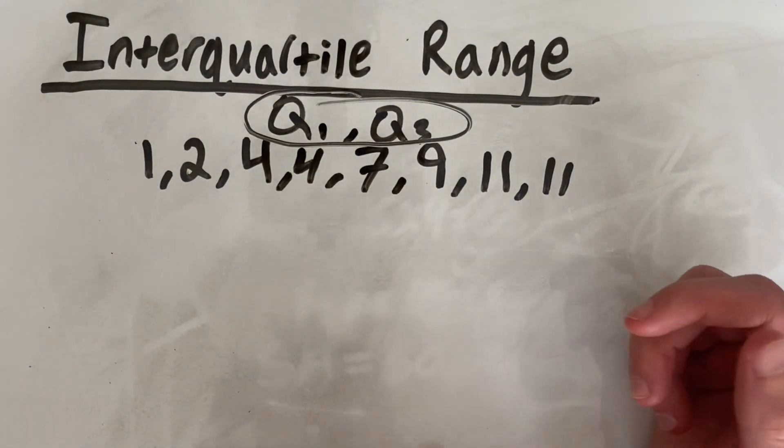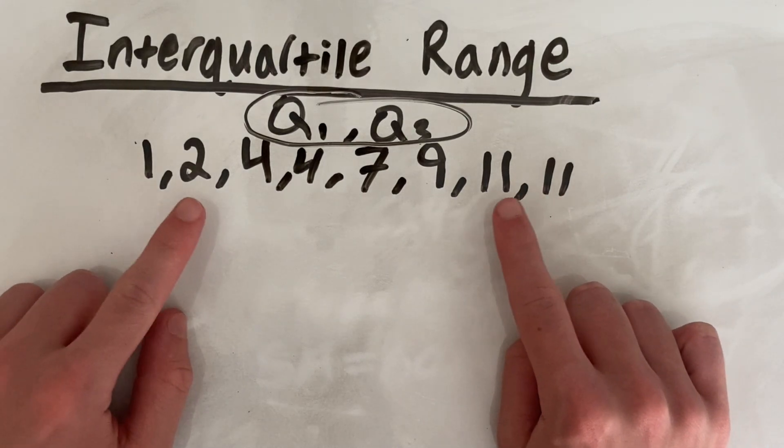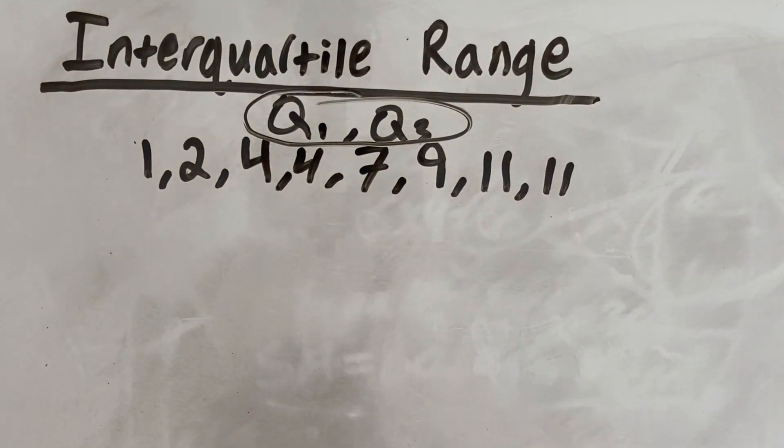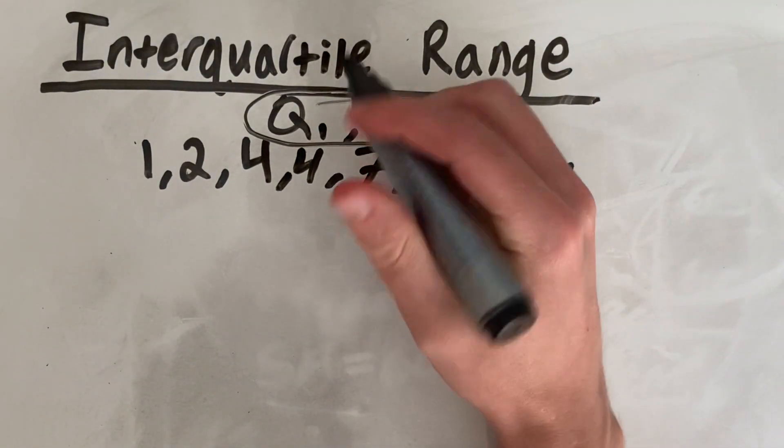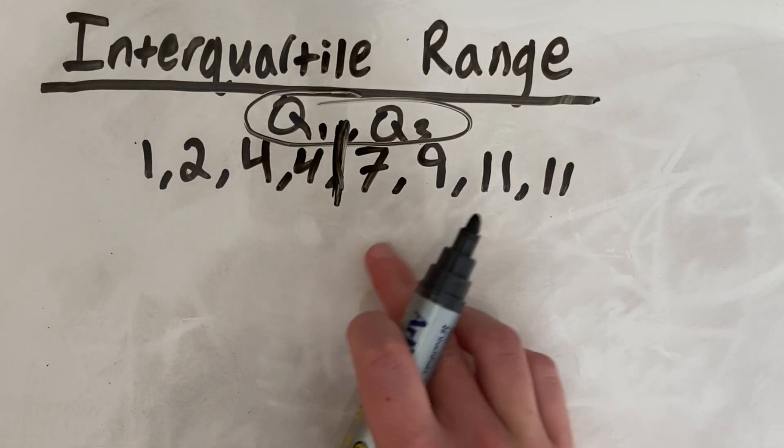To do that, start at the outside, and slowly work your way in, until you get to the middle. In my case, I don't have a middle number, but rather the middle is in between the 4 and the 7. And that's because I had an even amount of numbers.